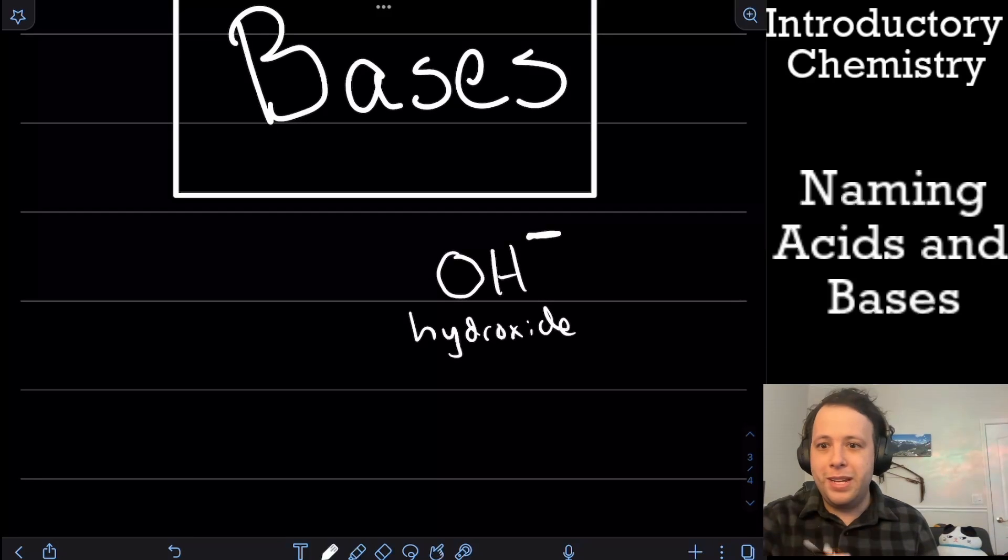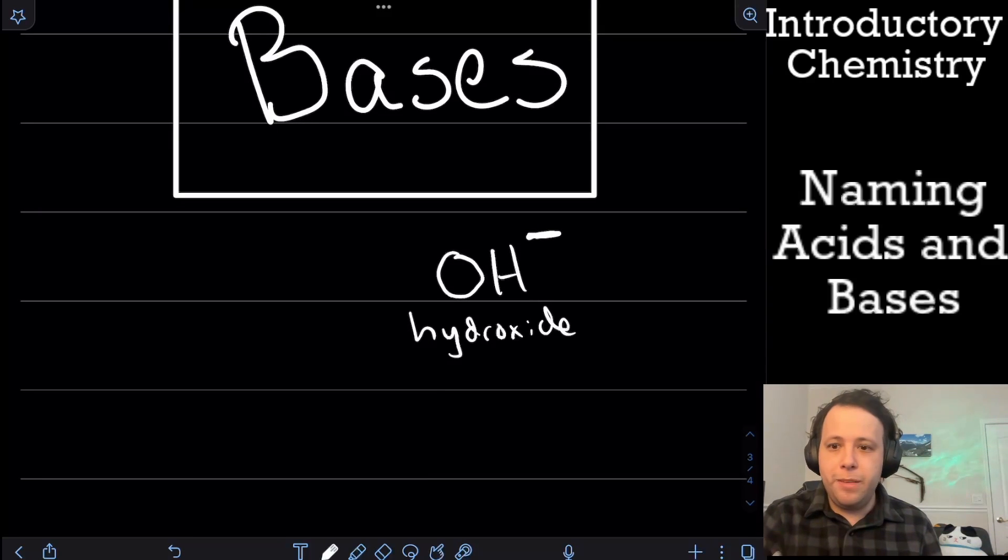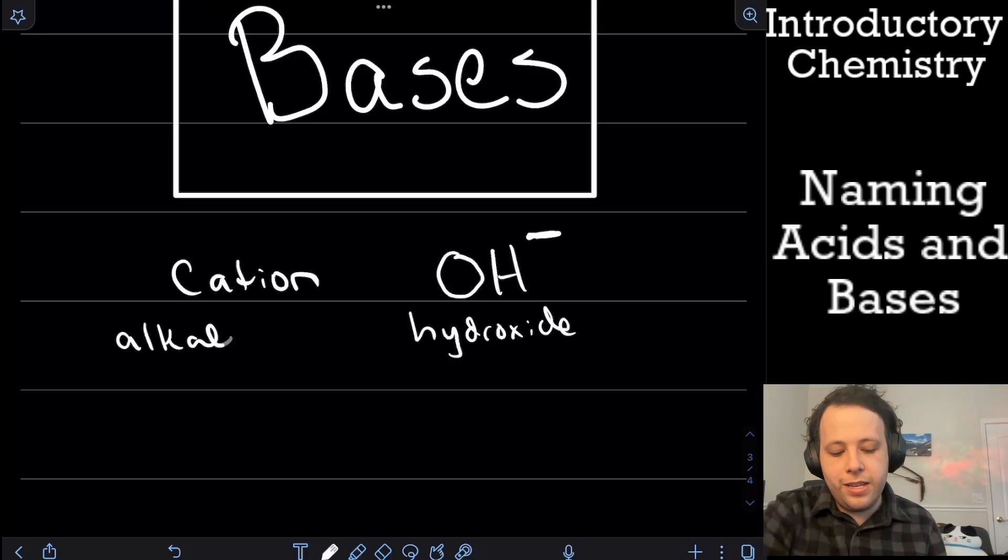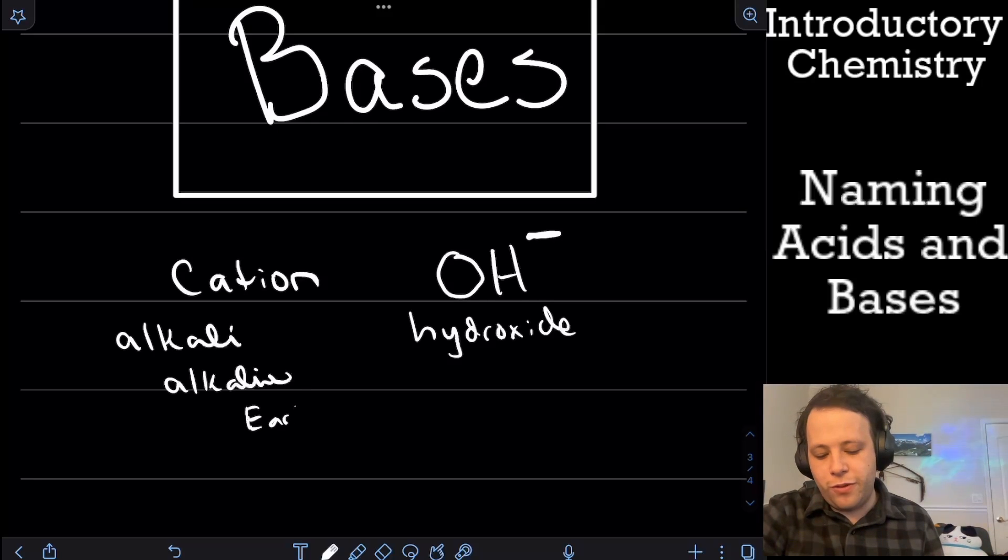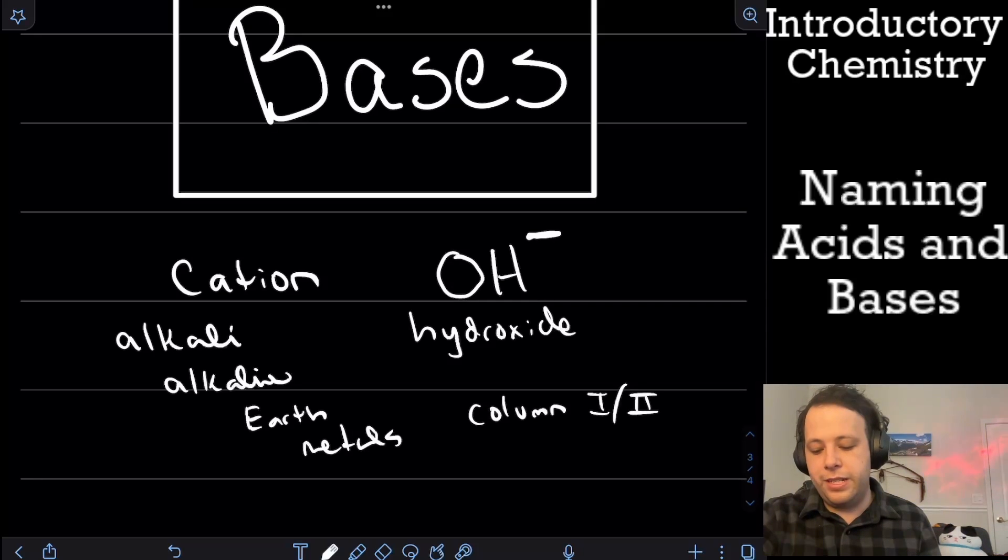Now, in order for it to make a base, it's typically bonding to some type of cation. So we're going to have a cation bonded to a hydroxide. And a lot of the times, these are in the form of alkali and alkaline earth metals, which is your first two columns of the periodic table. So column one and two is for most examples. That's not all the time, but that is for most of the times for introductory chemistry, we tend to see alkali, alkaline earth metals attached to a hydroxide.